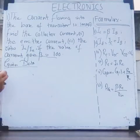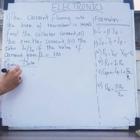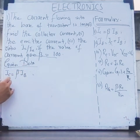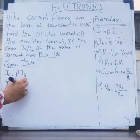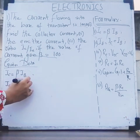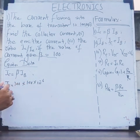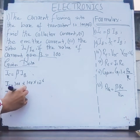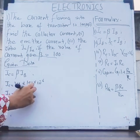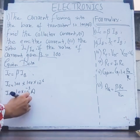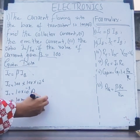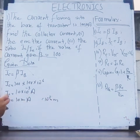Formula number one for calculation of collector current: Ic equals beta multiplied by Ib. Ib equals 100 microamperes, so Ic equals 100 times 100 times 10 to the power minus 6. This gives us 10 to the power minus 2 amperes or 10 milliamperes. That is the collector current.